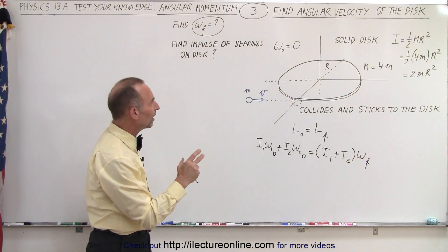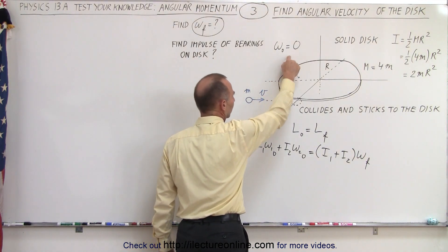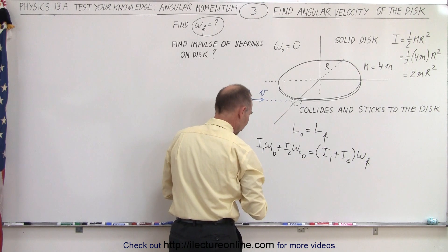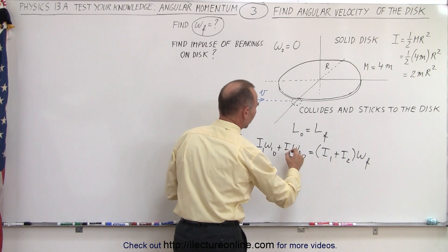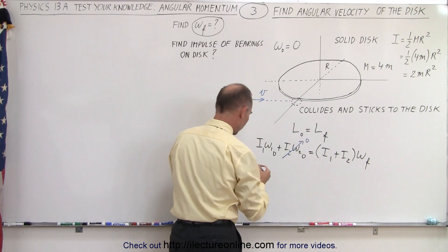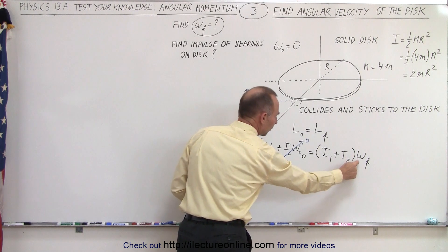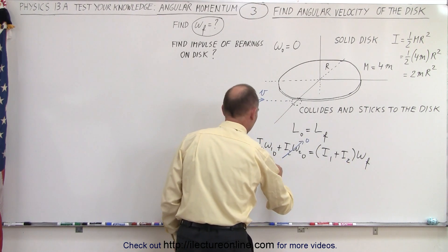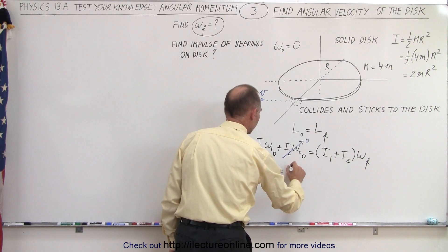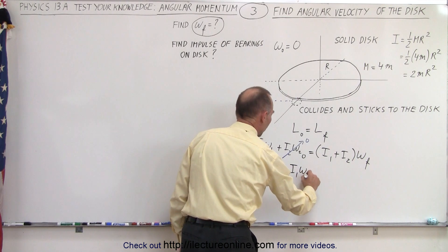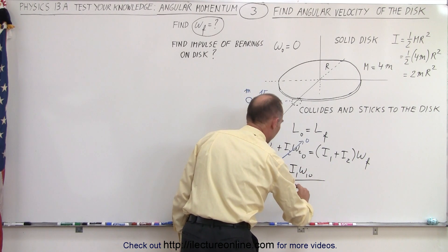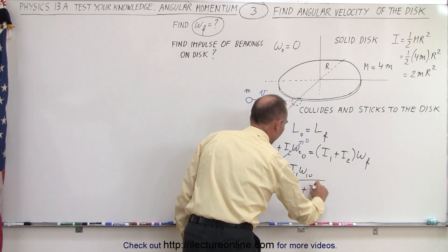Now, since the disk does not have any initial angular velocity, we can say that this portion goes to zero. So the portion of the disk goes to zero, which means that if we solve for ω_final, we can write that ω_final equals I₁ω₁_initial divided by (I₁ + I₂).